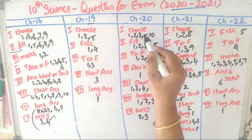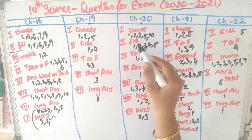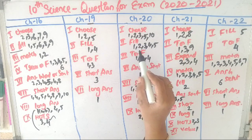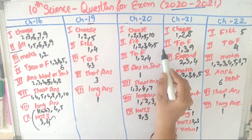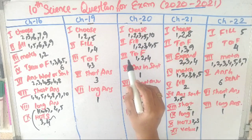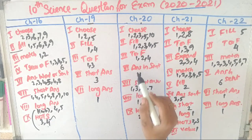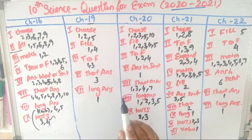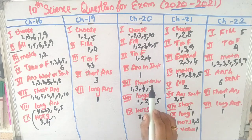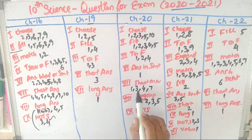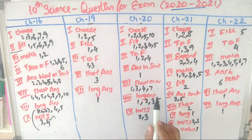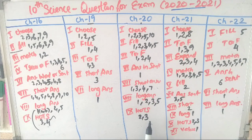Chapter 20: choose 1, 2, 3, 5. Second, fill in the blanks is 1, 2, 3, 5. Third, true or false is 1, 2, 4. Sixth, answer in short is 1. Seven, short answer is 1, 3, 4, 7. Eighth, long answer is 1, 2, 4, 3, 5. Hard answer is 2, 3.